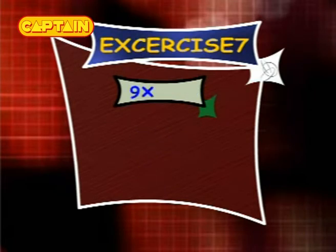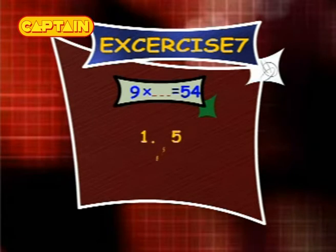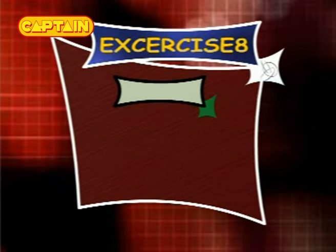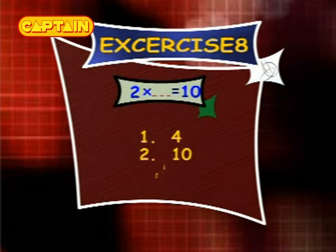Exercise 7: 9×__ equals 54 — options are 5, 4, 6. Exercise 8: 2×__ equals 10 — options are 4, 10, 5.